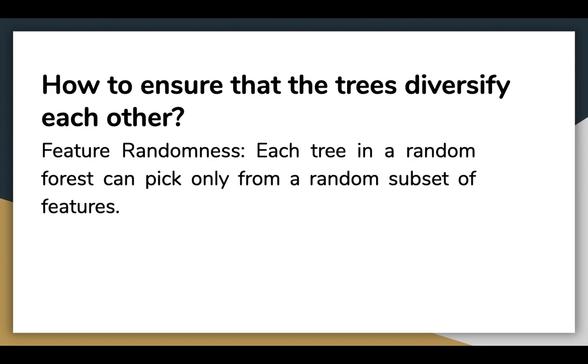Next is feature randomness. Each tree in a random forest can pick only from a random subset of features. In a normal decision tree, when it's time to split a node, we consider every possible feature and pick the one that produces the best separation between observations in the left node versus those in the right node.